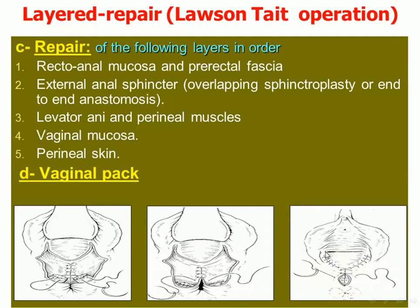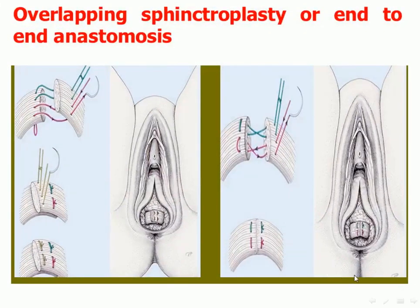As shown in this picture, this is the perineal skin and this is the vaginal mucosa after closure. This is the repair of the external sphincter by the two techniques: overlapping technique and end-to-end anastomosis.